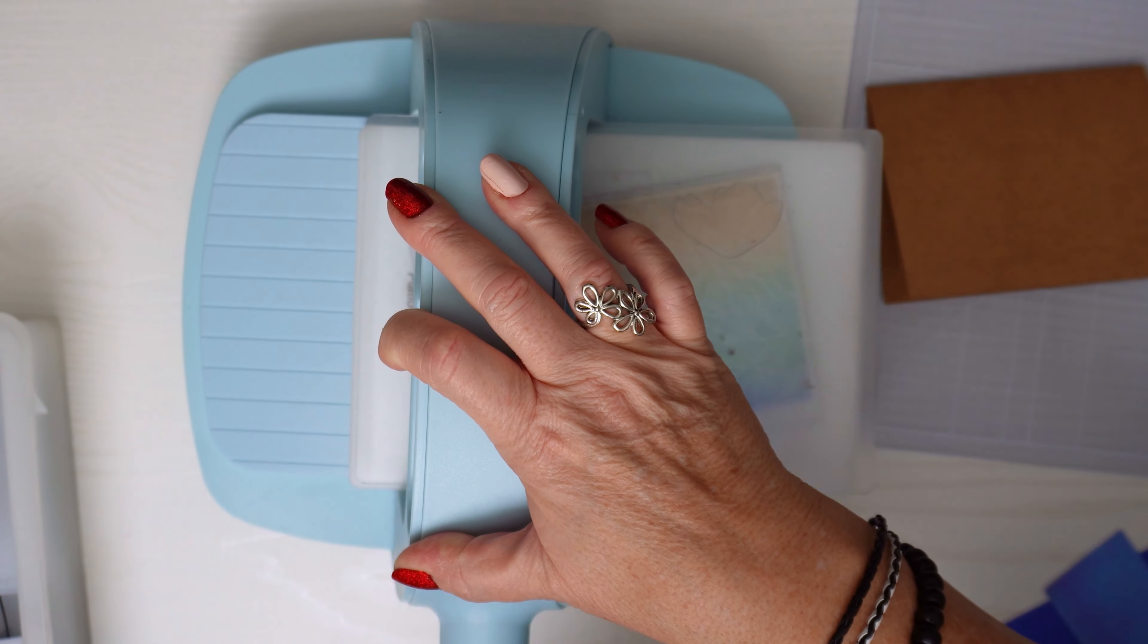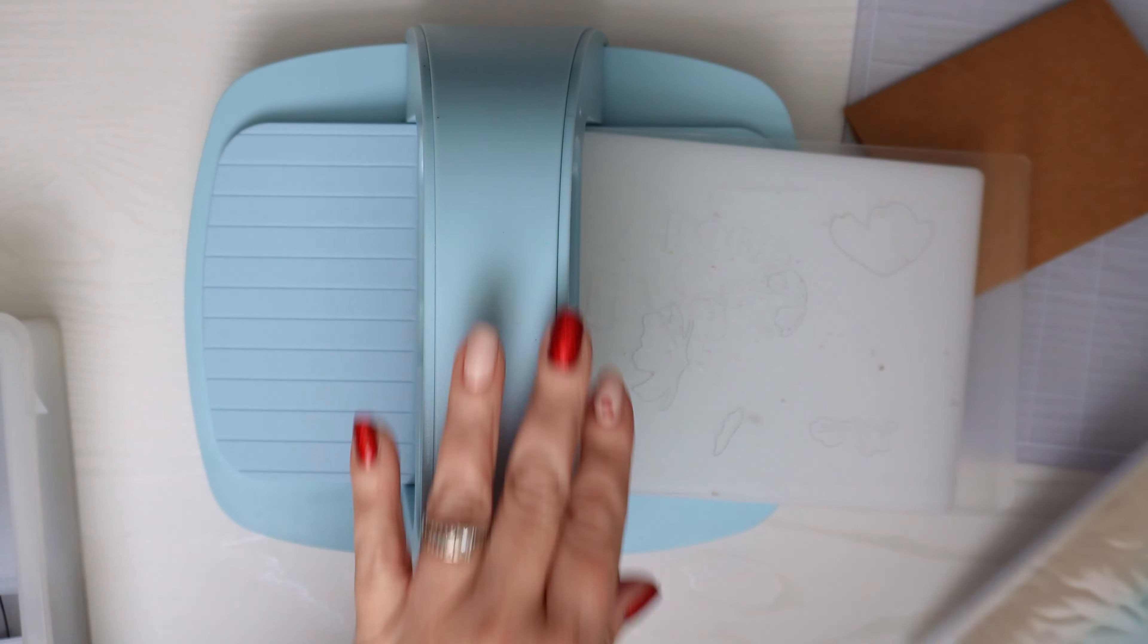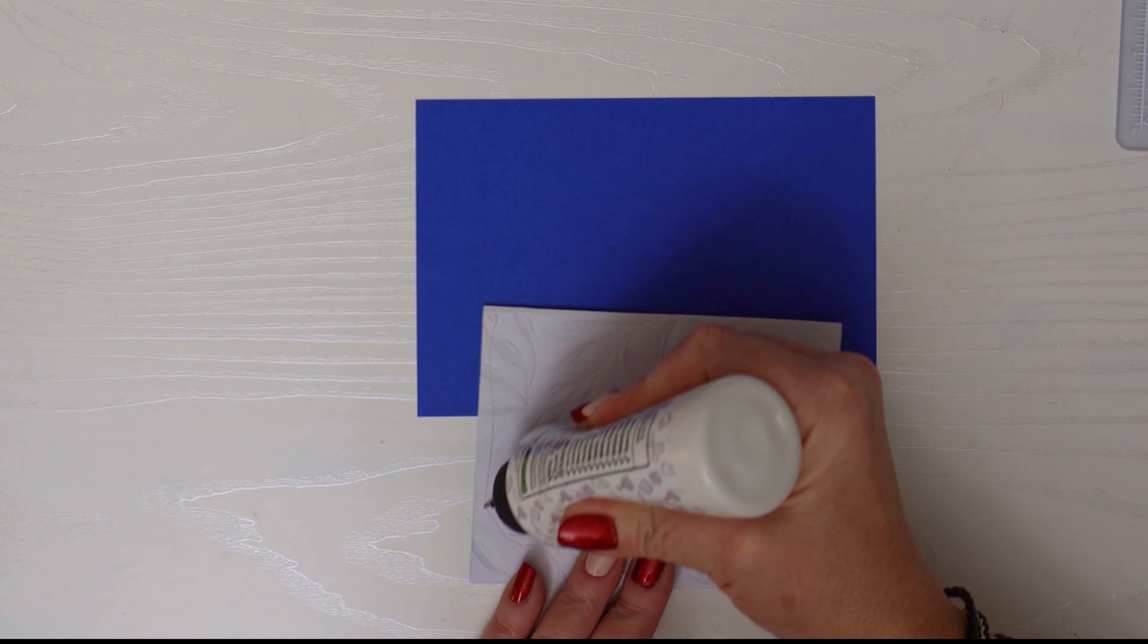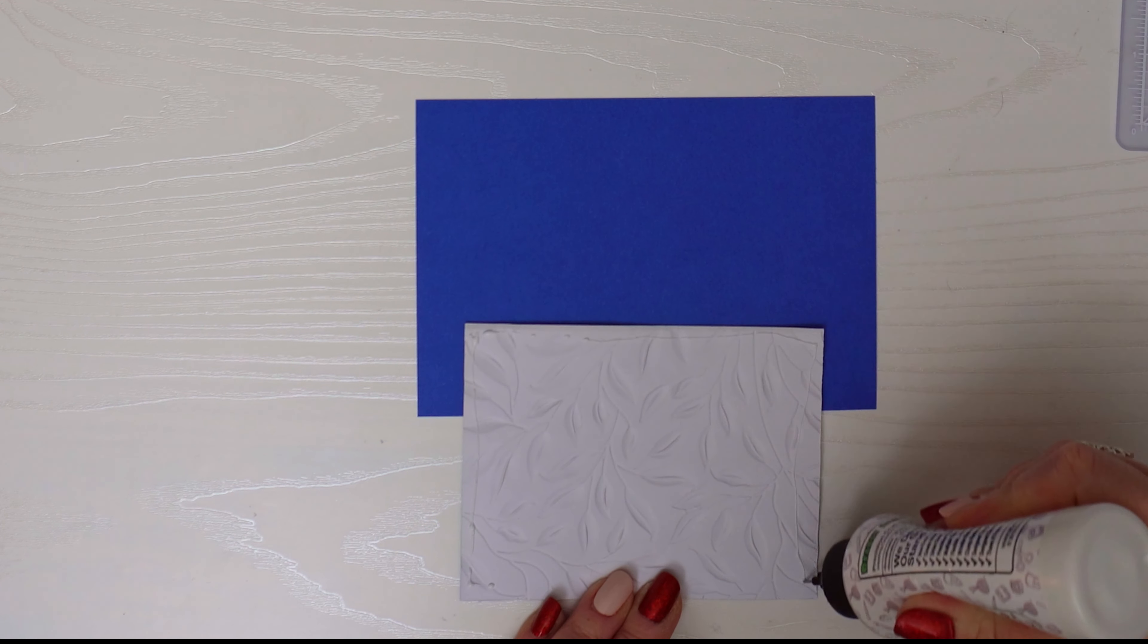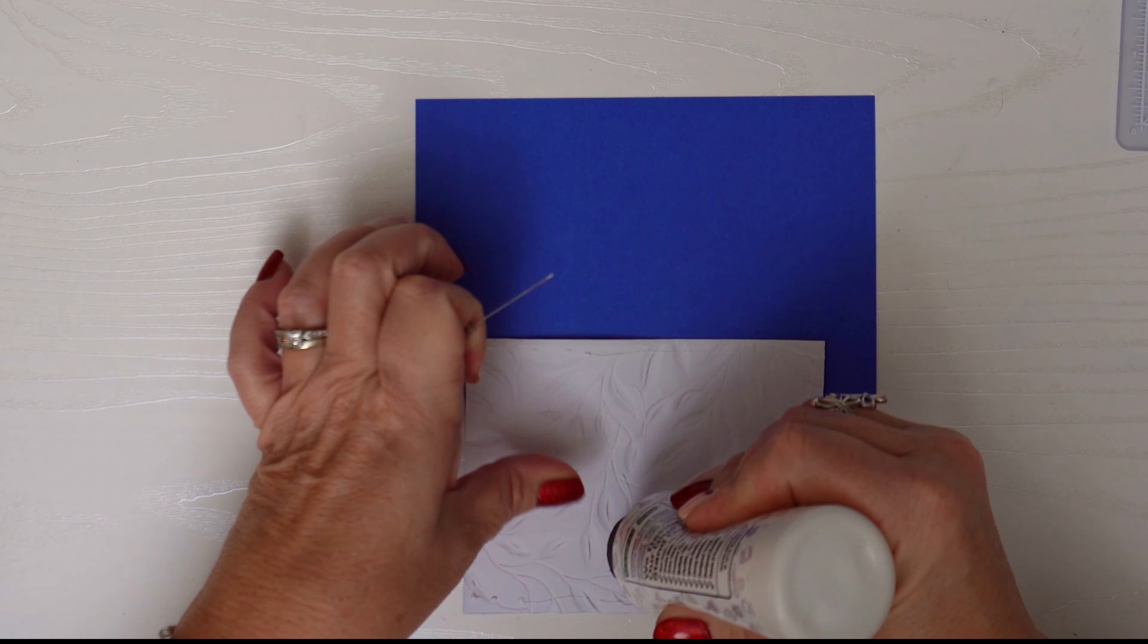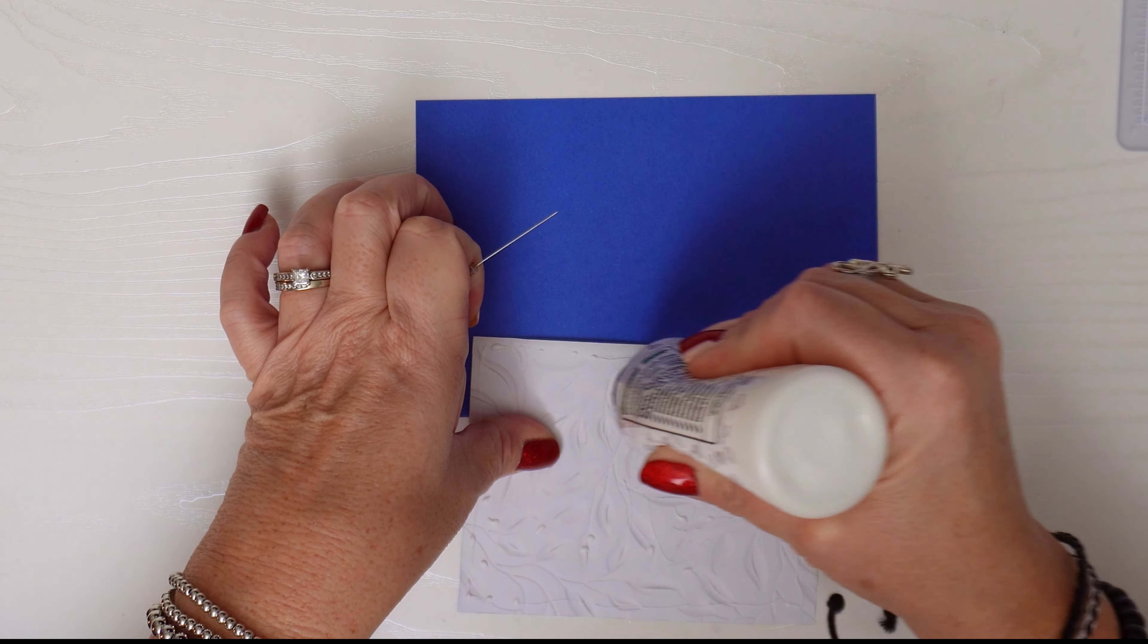Now we have the paper cut out and I'm going to want to add a sentiment in the center of the card. So should I use the design paper or more of the bold blue as the backdrop? What would you have done here? Let me know in the comments.